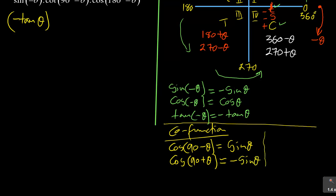Similarly for sine co-functions: sin(90 − θ) = cos θ, and sin(90 + θ), because sine is positive in the second quadrant, becomes +cos θ.